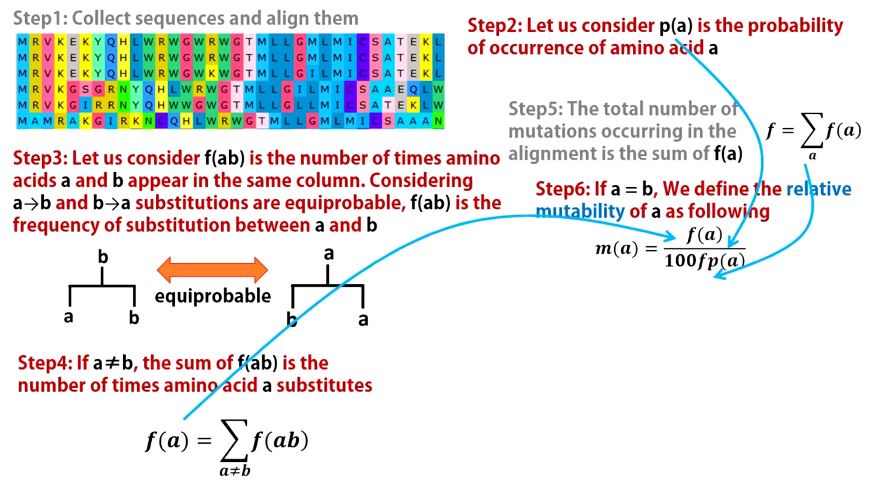If A and B are same, this means that we are calculating the probability of A remaining unchanged during this interval. This is based on relative mutability of amino acid A which is given by this expression. The mutability of an amino acid is a measure of how much it changes in the evolutionary period of interest. Thus MAA which represents the probability of remaining unchanged is given by this. This 100 reflects the fact that the unit of evolution used in this model is the amount of evolution that will change 1 in 100 amino acids on average. This is referred to as 1 PAM evolutionary distance.